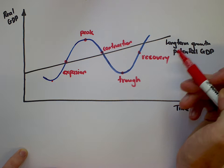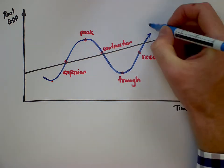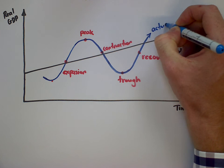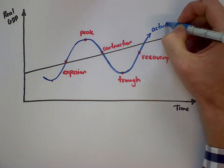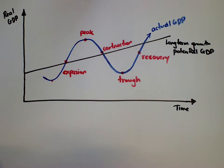This is kind of just a language to explain the phases of the business cycle. Sometimes we call this, instead of the potential GDP, the actual GDP of the country.